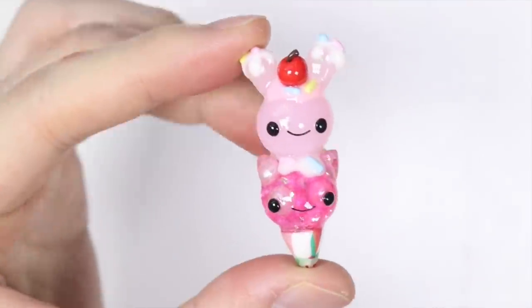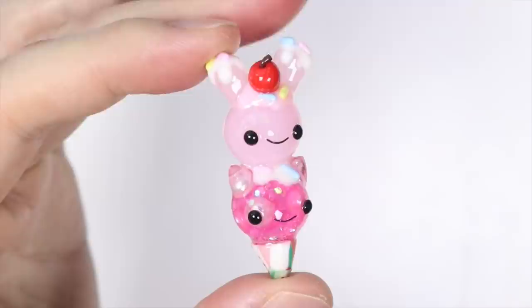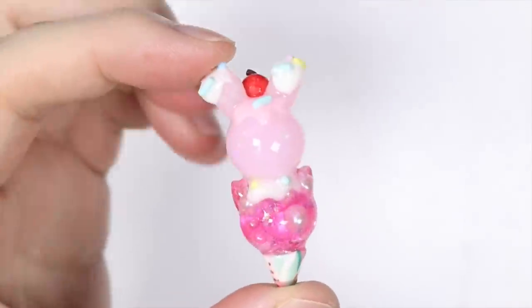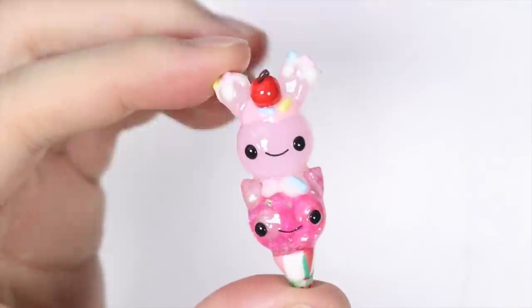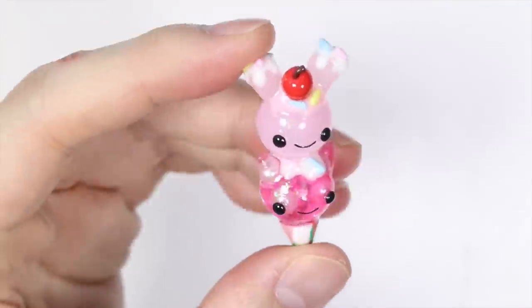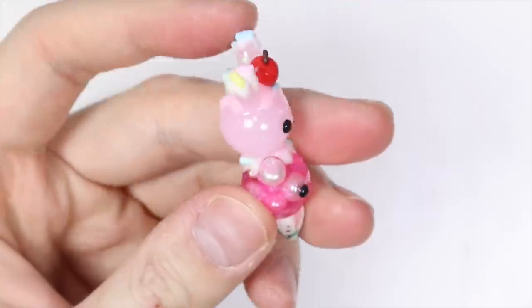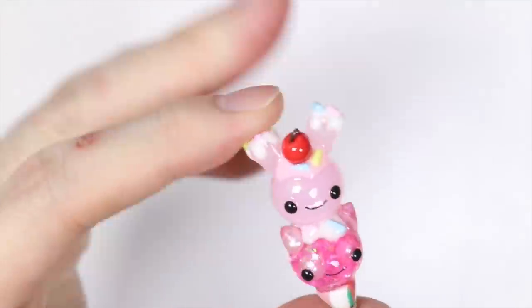And once fully cured here you have your little cat bunny ice cream cone scoop double scoop resin and polymer clay charm. And I hope you guys enjoyed. You don't have to decorate the way I did. You could change it up and mix it up with different animals. But I hope you guys enjoyed this video and thank you for watching.